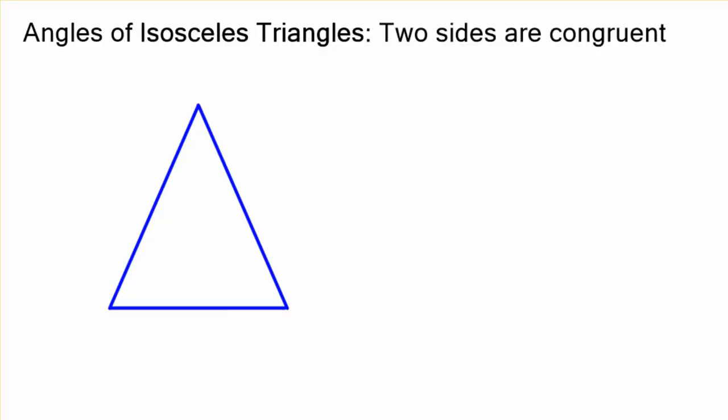Today's lesson is going to be all about the angles of isosceles triangles, like that one. Remember, two sides are going to be congruent in any isosceles triangle, so those two are congruent.